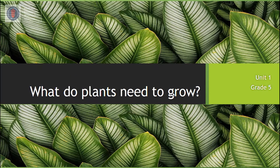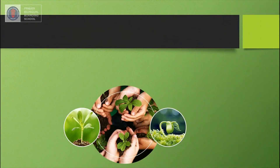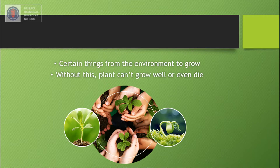Hello, back again with me, Miss Fanny, on a science lesson. Today we are going to learn about subtopic 1.4: What do plants need to grow? This subtopic is part of Unit 1: Investigating Plant Growth. In this subtopic, you will learn to recognize the factors that plants need to grow. Plants need certain things from the environment to make them grow. Without these, a plant will not grow well or might even die. These things we call factors.